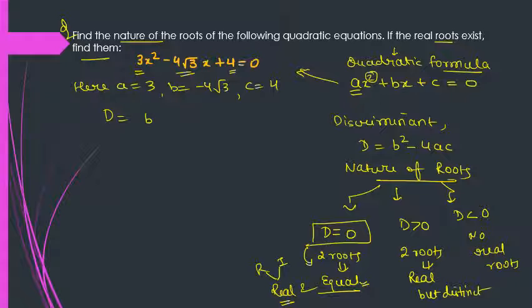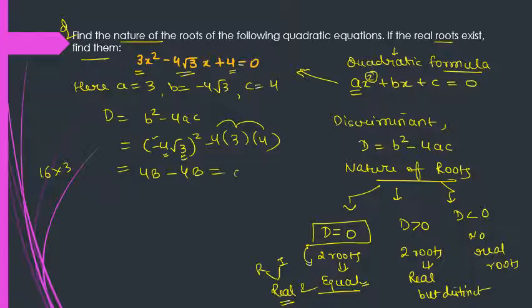So D will be b² - 4ac. That means (-4√3)² - 4ac. Now minus square is plus. Four fours are 16, √3 × √3 is 3, so 48. So 48 minus 4 times 12 times 4 is 48. You have D as zero. So that means you have two roots, but both of them are equal.